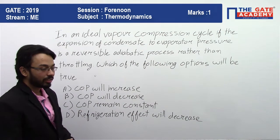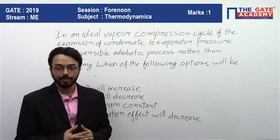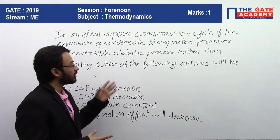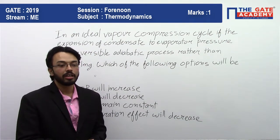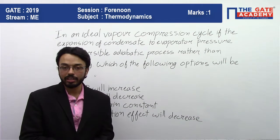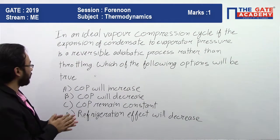Usually, if you remember that in vapor compression cycle, the expansion is by throttling. In this case, we are asking that instead of throttling the condensate, if we expand it adiabatically, reversibly adiabatically, then what will happen?